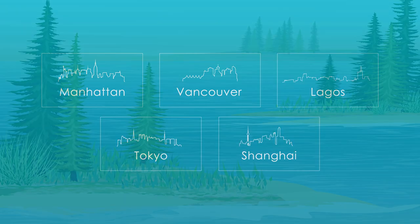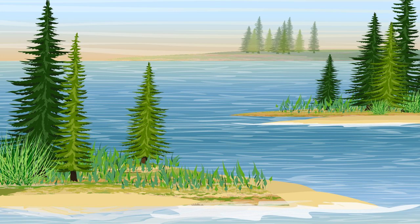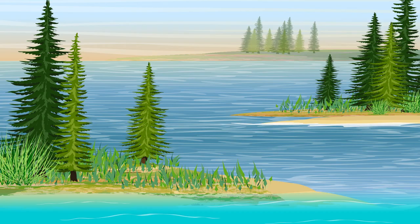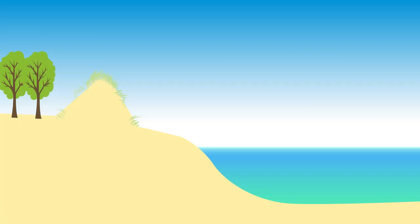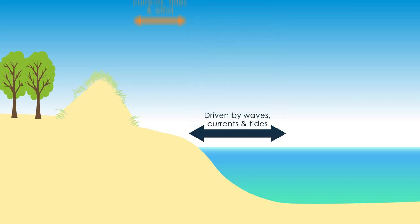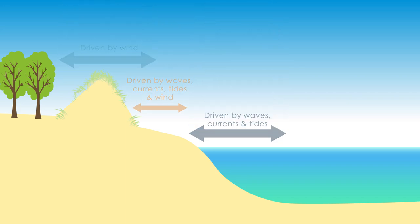In addition to displacing millions of humans, rising seas will alter natural coastal environments and ecosystems. Sandy beach systems are complex because they evolve through the interplay of ocean waves, currents and tides and wind action on land.